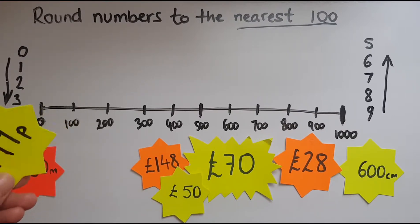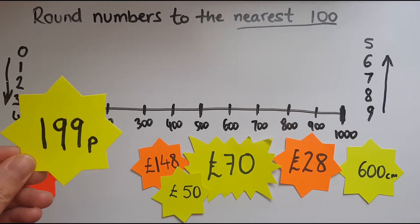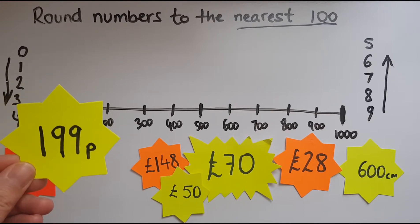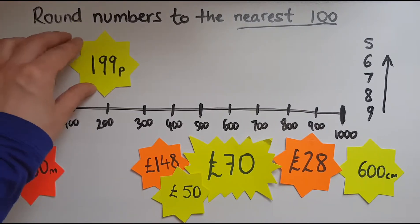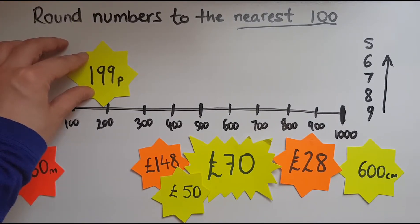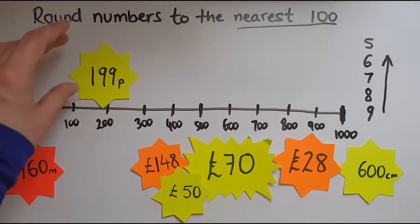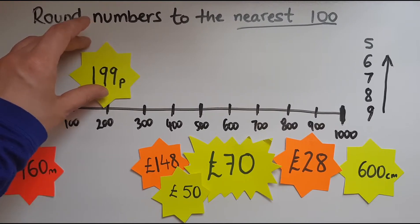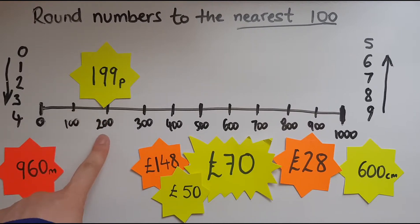So I've got 199 pence. Where do I place it on the number line? 199 is between 100 and 200. As you can see, 199 is very close to 200 — just one more pence and you'd get 200. So I'll place it here, and as you can see its position on the number line is very close to 200.